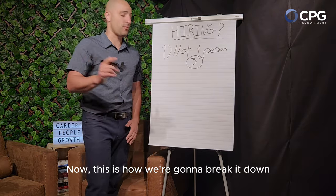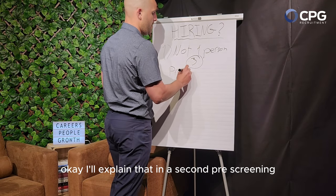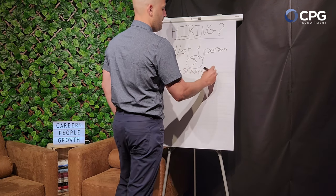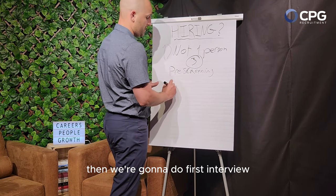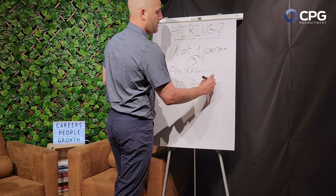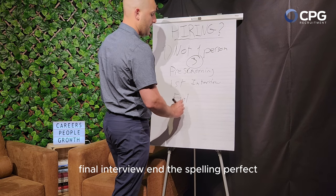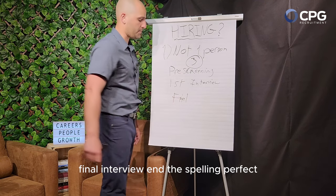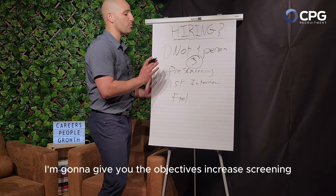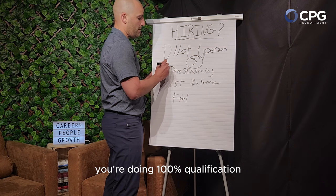Here's how we're going to break it down. We're going to break this down with pre-screening, then a first interview, and then the final interview. With the pre-screening, you're doing 100% qualification — meaning, does this person have the skill? Does this person have the experience? It's pure qualification, no personality whatsoever.